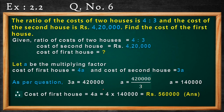If A is the multiplying factor, then the cost of the first house is 4A and the second house is 3A. According to the question, the cost of the second house is 4,20,000. So we write 3A = 4,20,000. Bring 3 to the right side — since it is multiplying A, while crossing the equals sign it goes to the denominator. So A = 4,20,000 divided by 3, which gives A = 1,40,000.